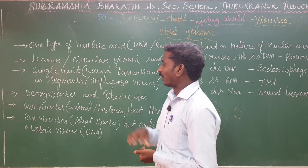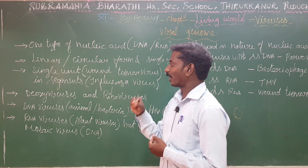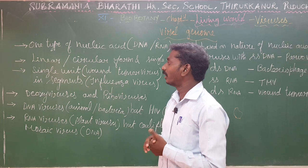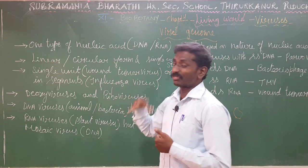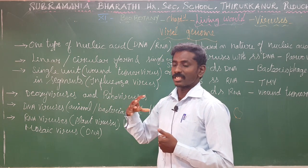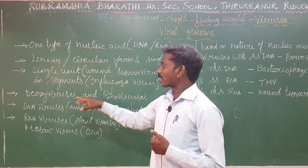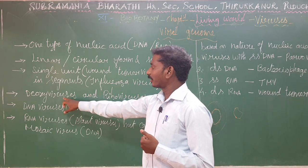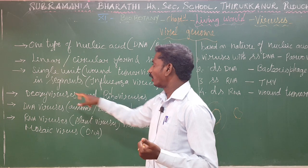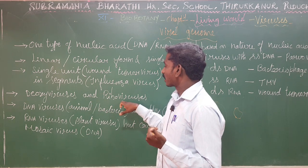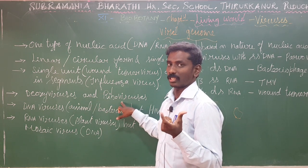Based on the virus nucleic acid, two types are classified: Deoxy viruses and Riboviruses. If the virus consists of DNA as its nucleic acid, it is named a Deoxy virus. Otherwise, if the virus consists of RNA as its nucleic acid, it is called a Ribovirus.